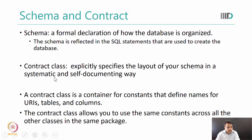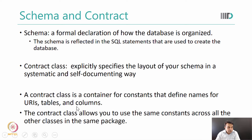The contract class specifies our schema in a systematic and self-documenting way, so that looking at the contract class gives us an intuition about what kind of schema we are using. For example, the contract class is used as a container for constants that define names for URIs, tables, and columns. By going through these names we can understand what kind of tables, columns, and URIs are present in our database. Because we are using a contract class, we can use the same constants across other classes in the same package.